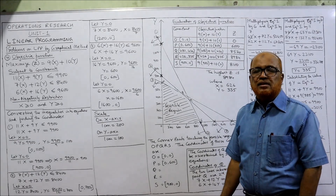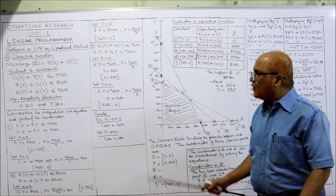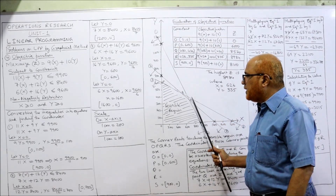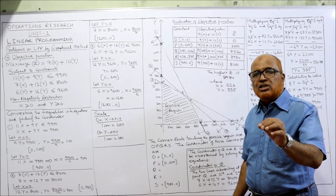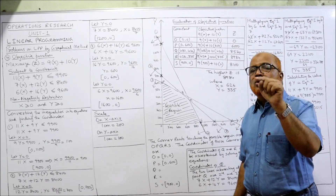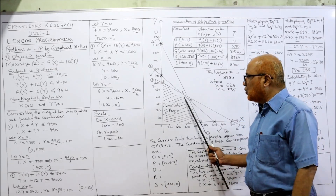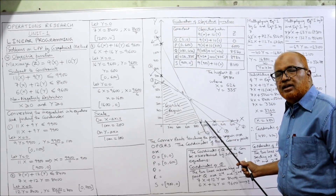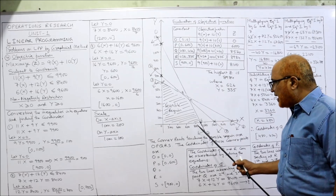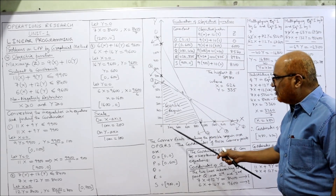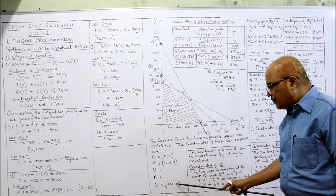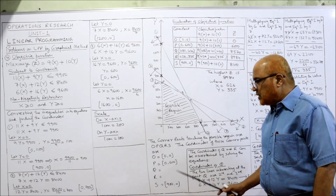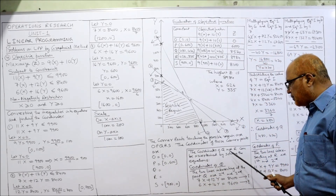The coordinates of Q and R are found by solving the equations of the intersecting lines. At Q, the second and third inequalities intersect, so we solve those two equations. At R, the first and second inequalities intersect, so we solve those two. For S, by inspection the coordinates are (900, 0). The only unknowns are Q and R.